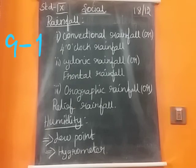This heating results in the formation of convectional air currents. The ascending moist air cools, condenses, and the result is convectional rainfall. So the air rises and rises.